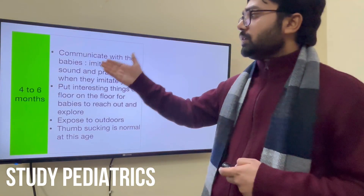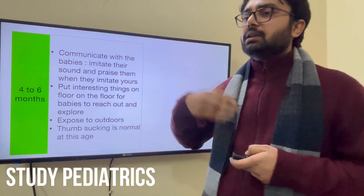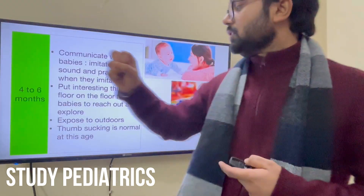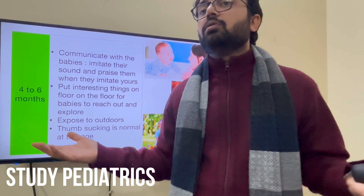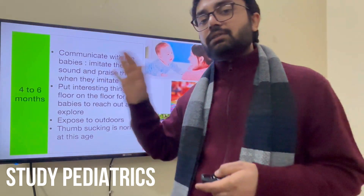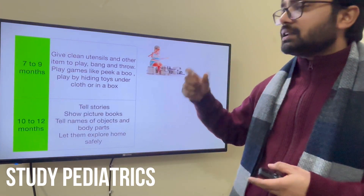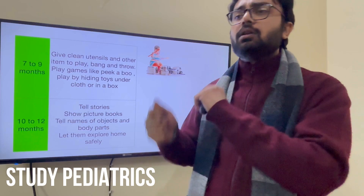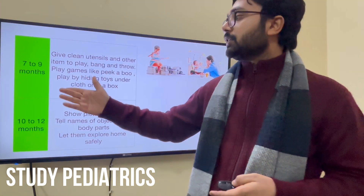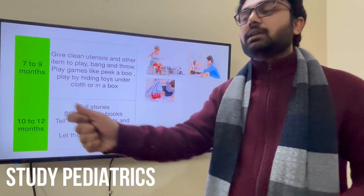For 4 to 6 months, communicate with the baby — say a few words, imitate their sounds, and praise them so bonding improves. Put interesting things in front of them as they can now reach for objects. Expose the child to outdoors — you cannot keep the child indoors all the time. Thumb sucking at this age is very normal. For 7 to 9 months, give them utensils they can bang, throw, or play with. Play games like peekaboo, which is simple but effective for development. Also play hiding games — hide a toy in front of the child so he goes and picks it up.